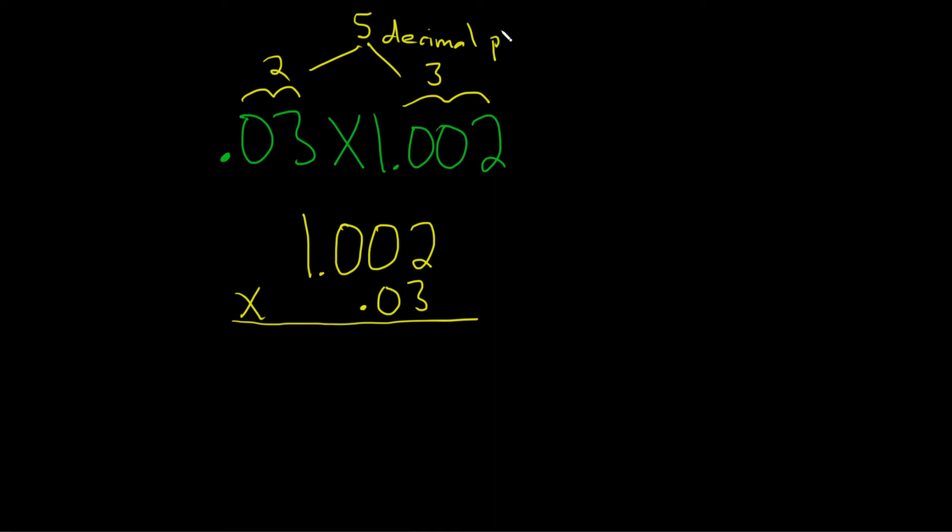That's always the case. Basically, you just take the decimal places from each one, and then the total is how many you're going to have. All right, let's do the math. So now we just multiply. 3 times 2 is 6.